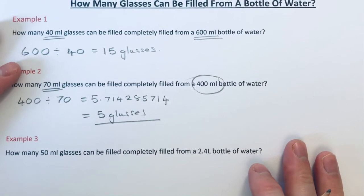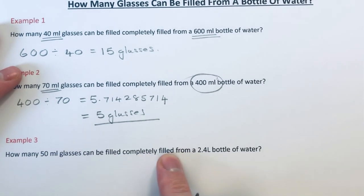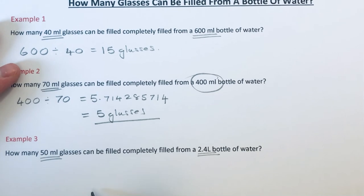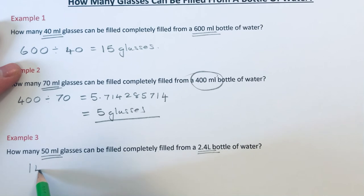Let's have a look at the final example. How many 50 milliliter glasses can be filled completely from a 2.4 liter bottle of water? This one's a little bit harder because we have the volume of the glass in milliliters and the volume of the bottle in liters. So we need to convert this volume from liters into milliliters. You might remember that a liter is a thousand milliliters, and to change liters to milliliters we multiply by a thousand.